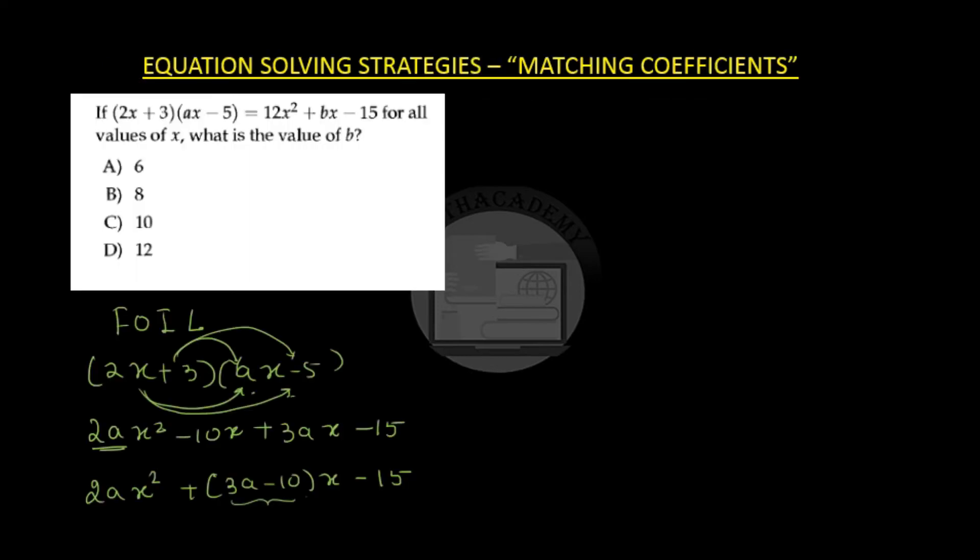If 2x plus 3 into ax minus 5 is equal to 12x square plus bx minus 15 for all values of x, what is the value of b? Here again we have an expression on the left hand side and an expression on the right hand side and we can use the strategy of matching coefficient.